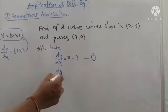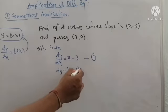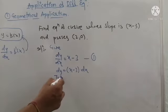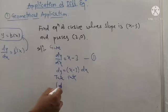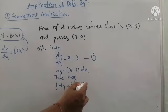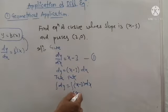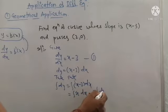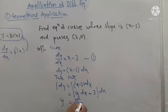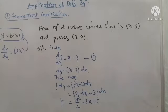To solve by the variable separable method, we separate the terms: we move dx to the right-hand side and take integration on both sides. We get integration of dy on the left and integration of (x minus 3) on the right. Separating the integrals: integration of dy is y, integration of x is x squared by 2, and minus 3 times integration of dx is minus 3x.